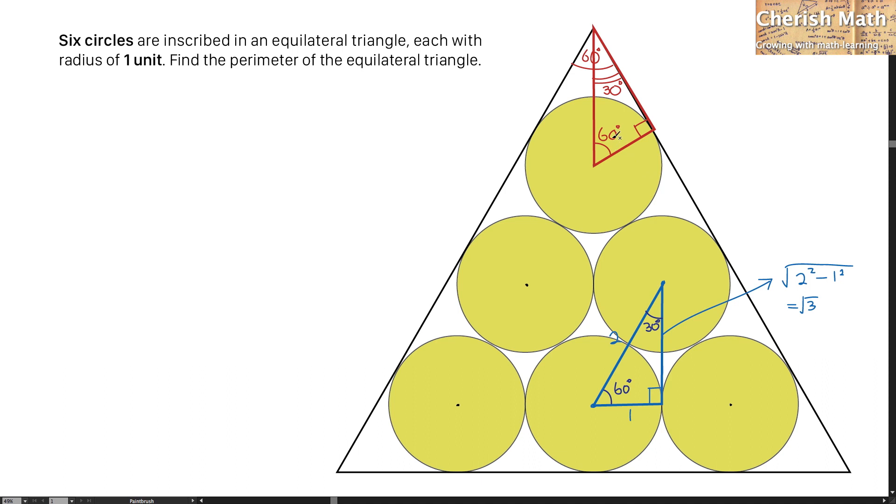And now, by comparing the red and the blue triangle, these two are identical or congruent to each other. And I can label here as 1 unit for the radius, and for this vertical length, this is going to be 2 units according to this one.